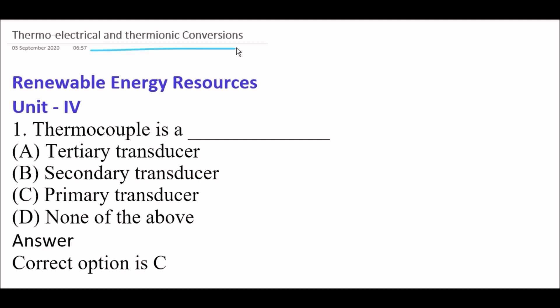The first question is: thermocouple is a blank space. Option A: tertiary transducer. Option B: secondary transducer. Option C: primary transducer. Option D: none of the above. The right answer is Option C — primary transducer. So thermocouple is a primary transducer.